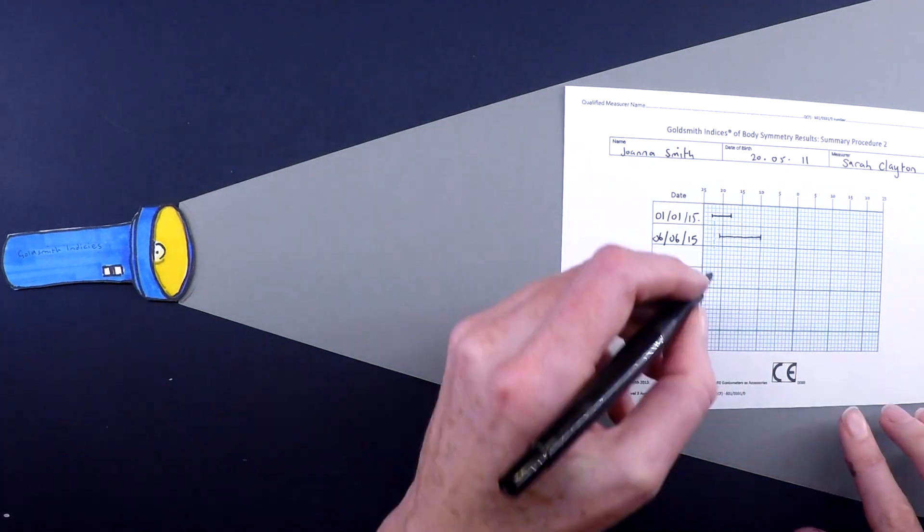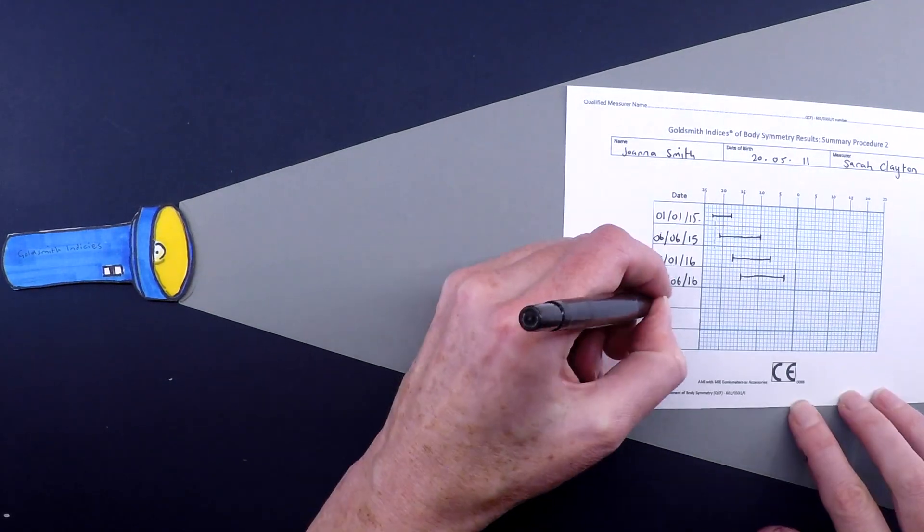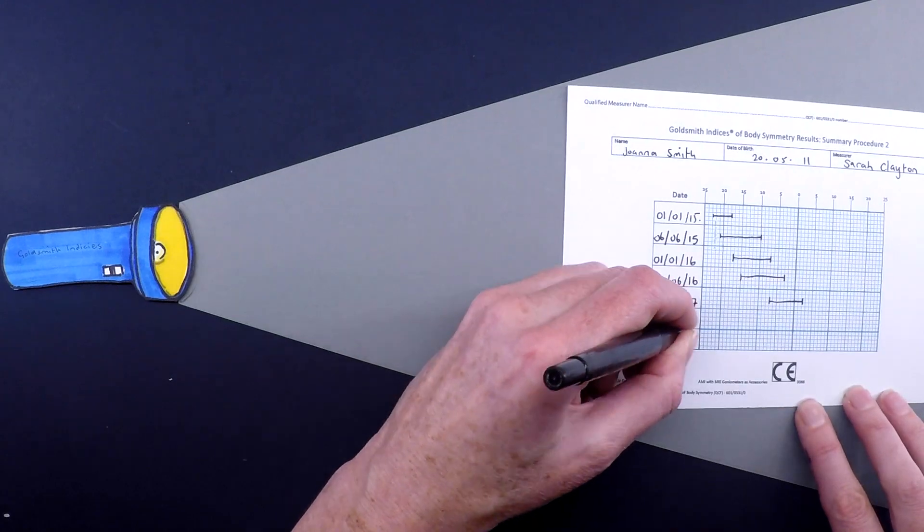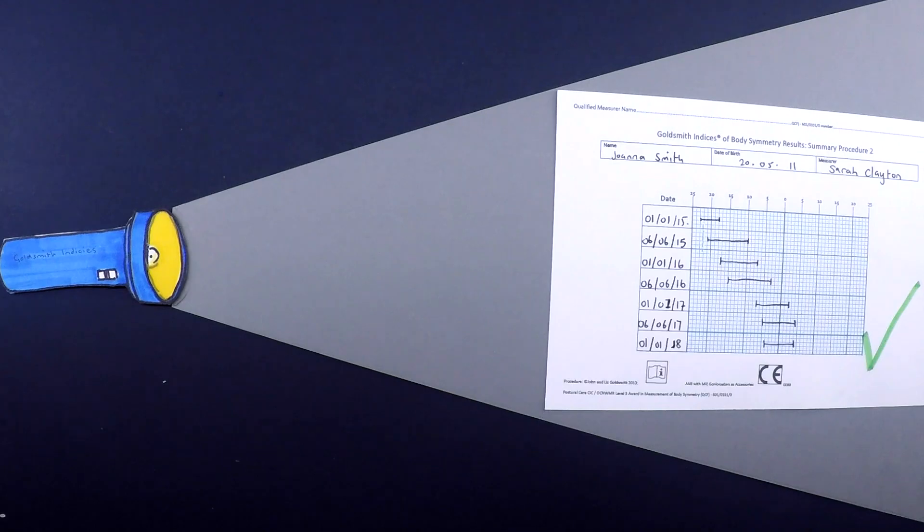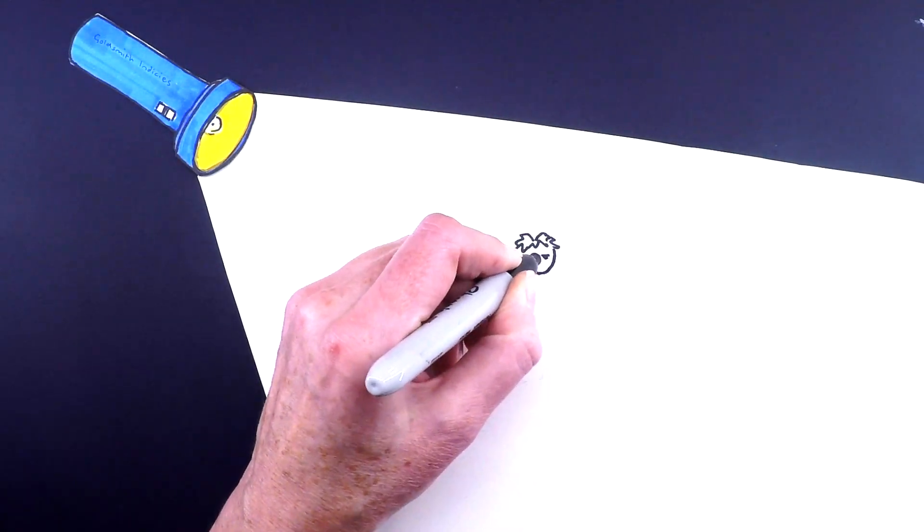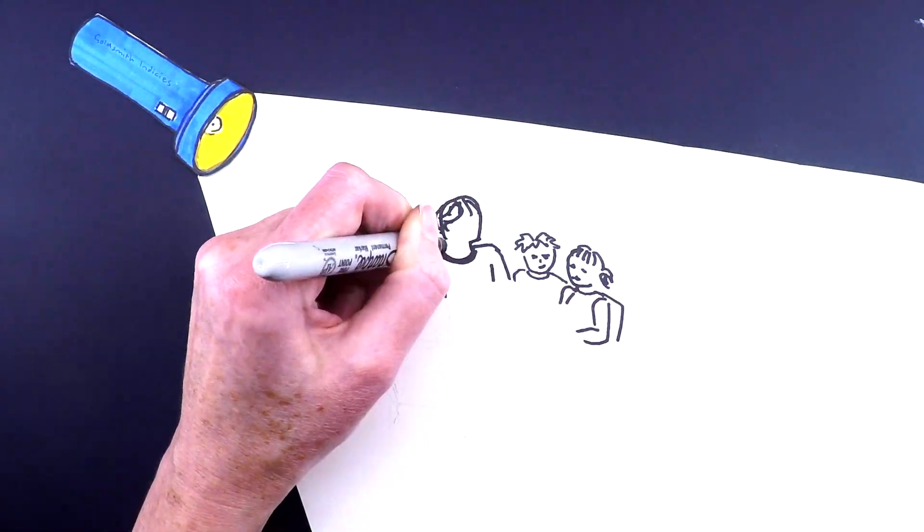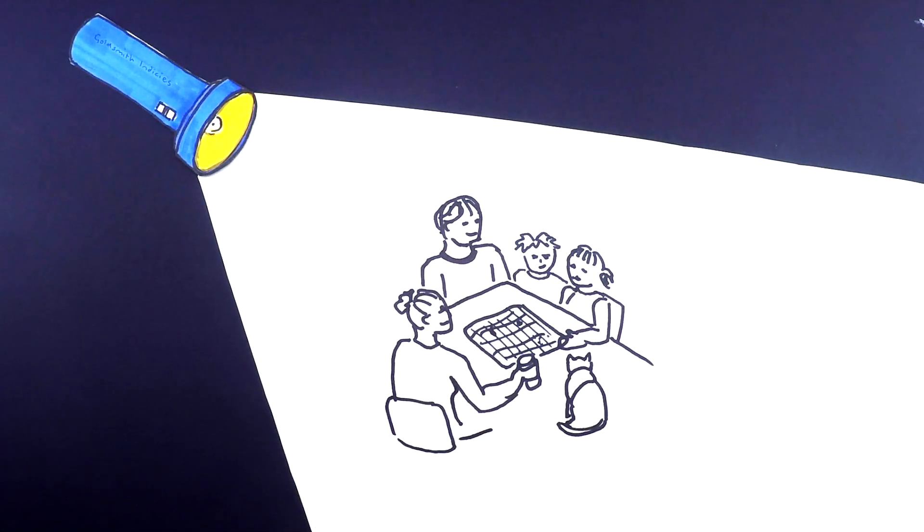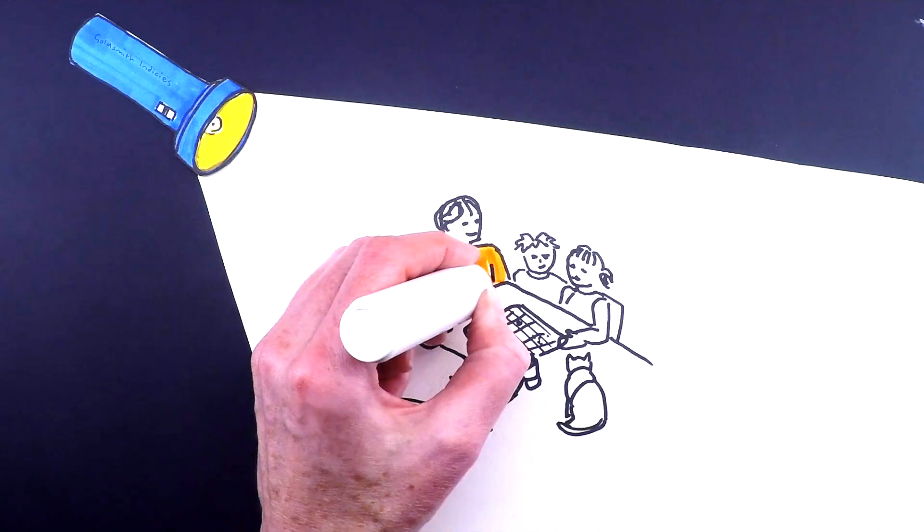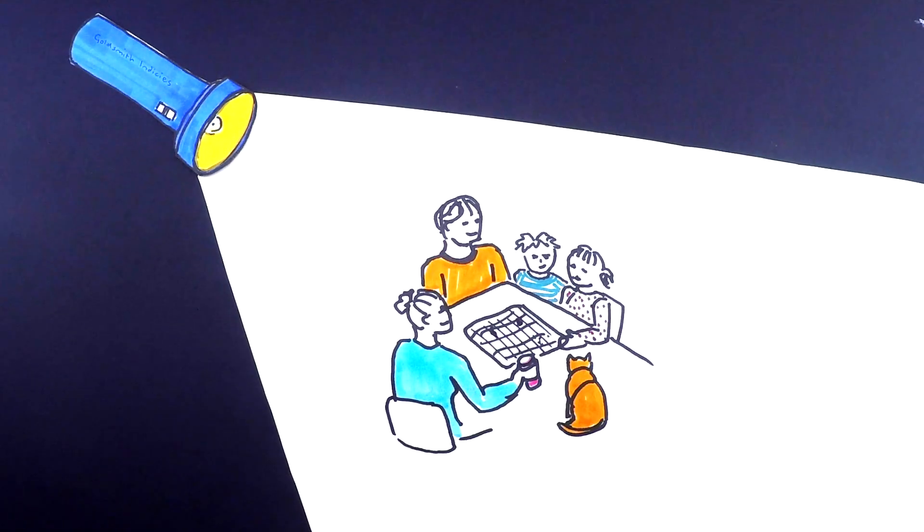Objective measurements support funding applications with clinical justification for life-changing equipment. They show us if body shape is deteriorating or improving. Crucially, measurements help the Smith family and the professionals who support them do the very best in their situation, so that the really important parts of life can happen—like family time, fun, and making memories together.